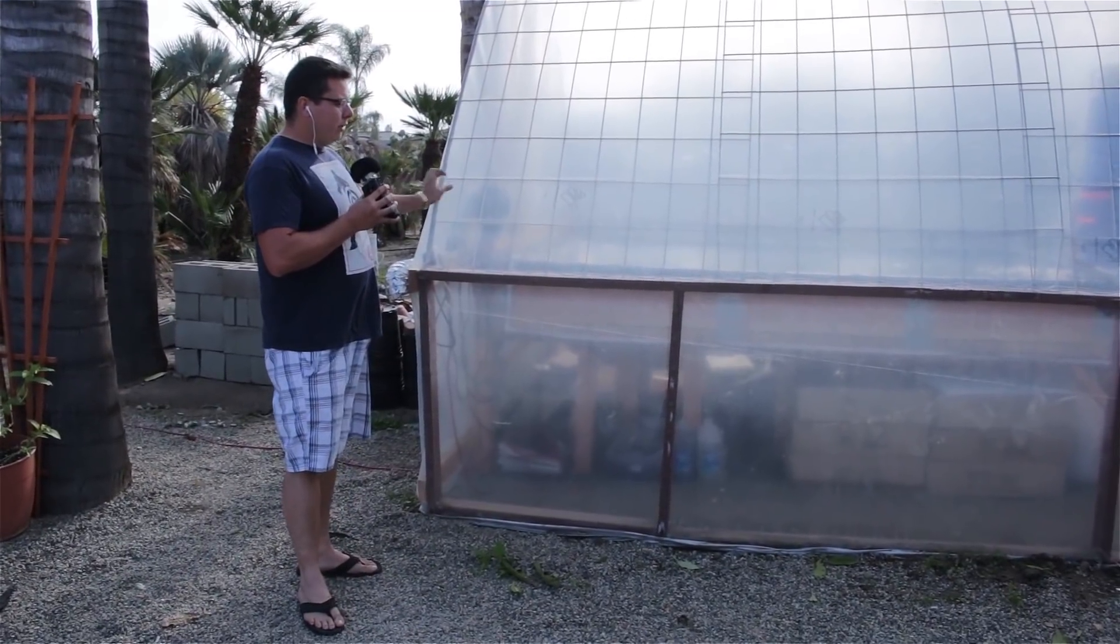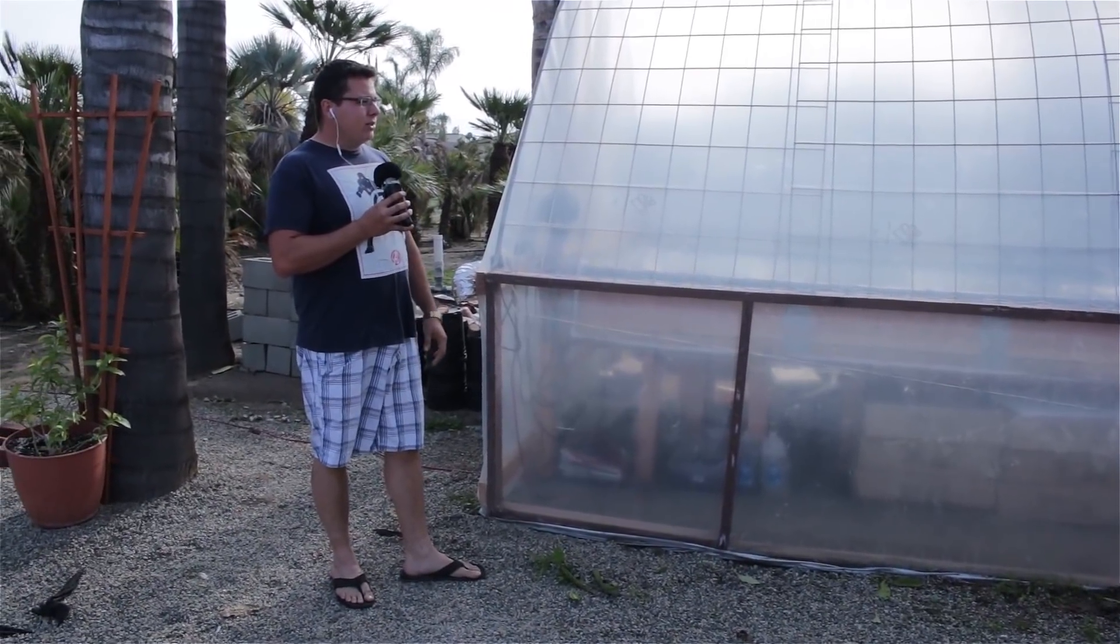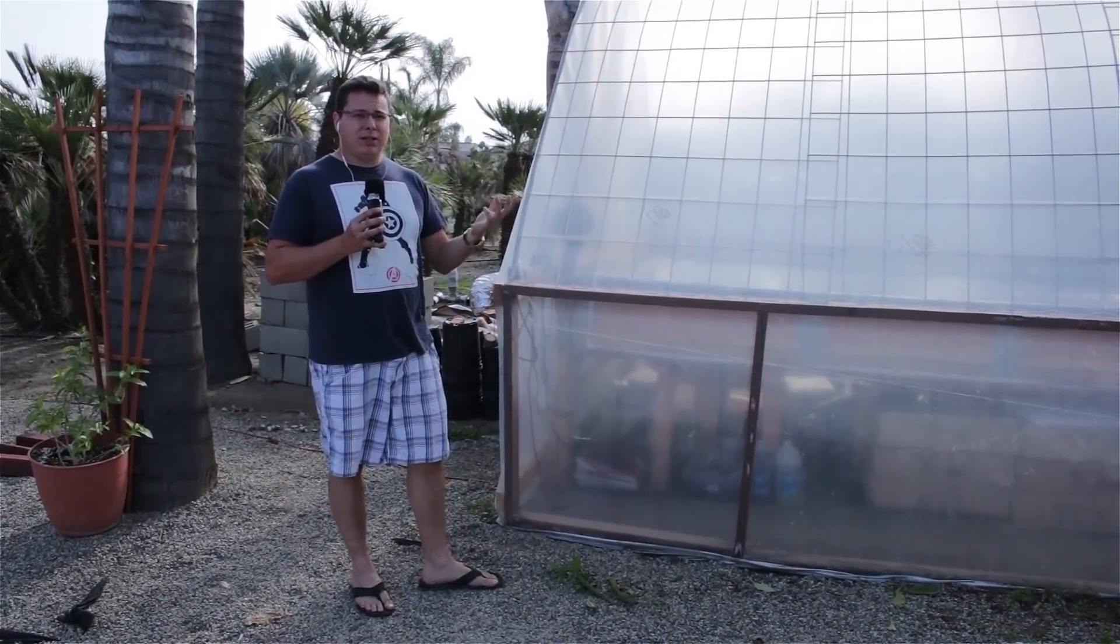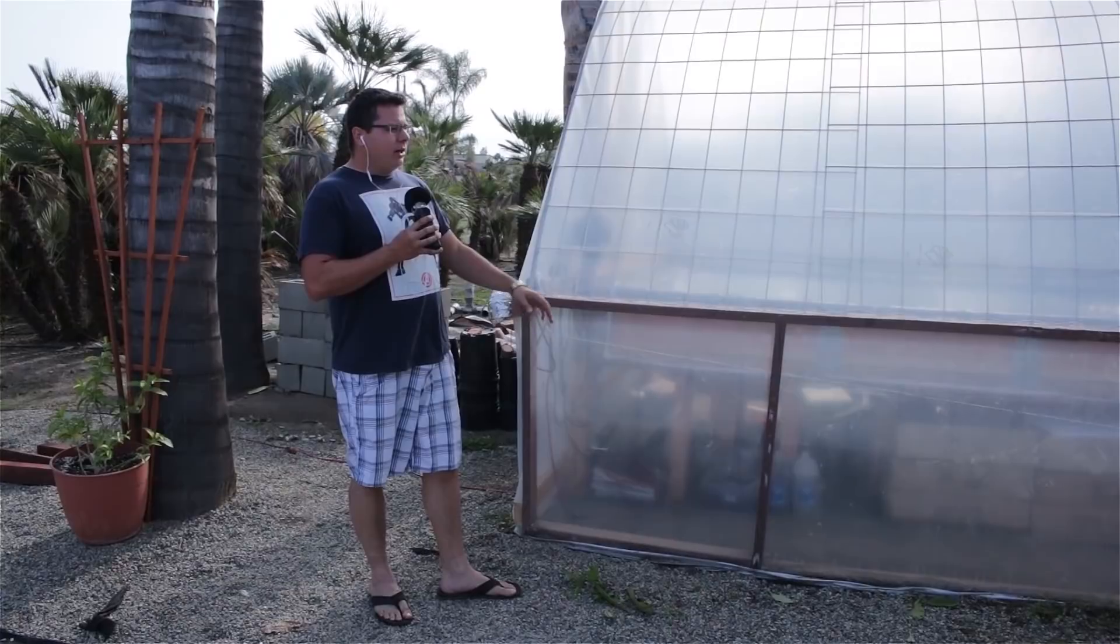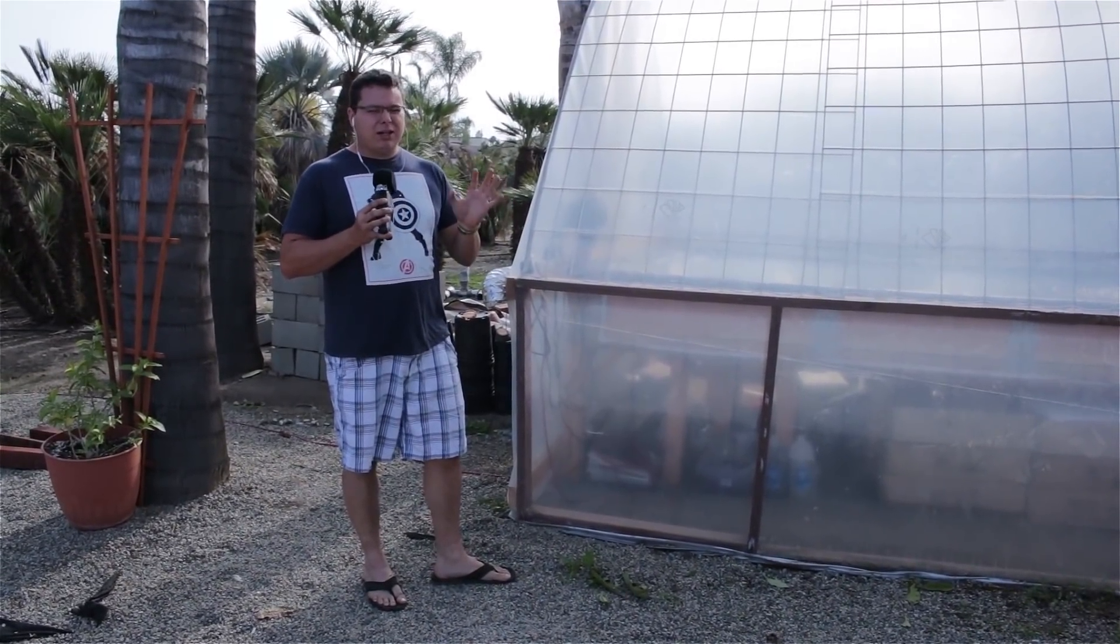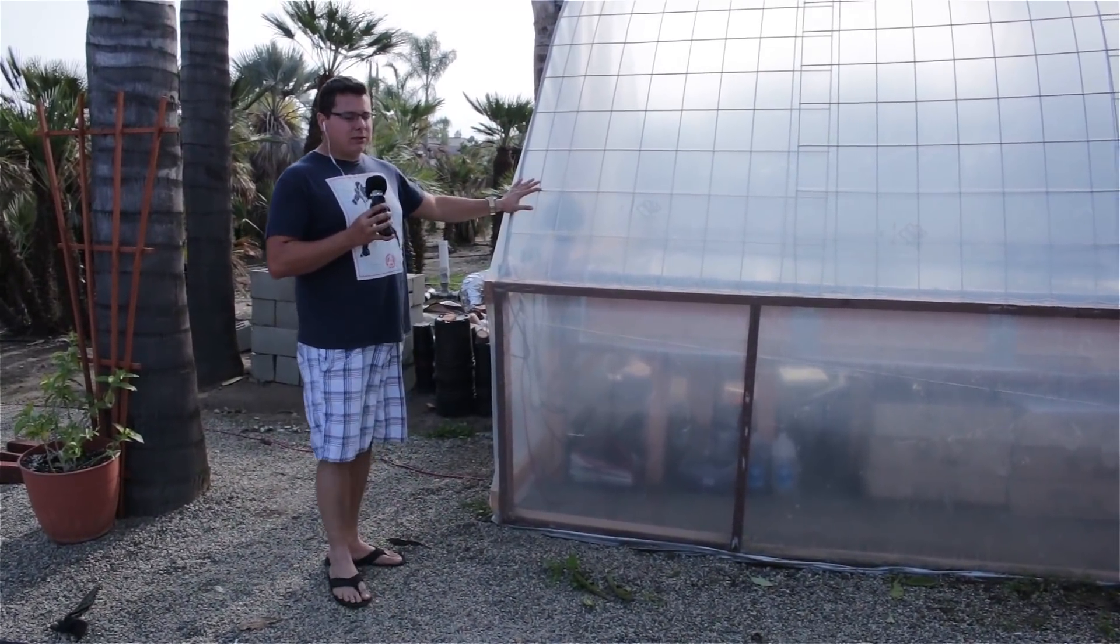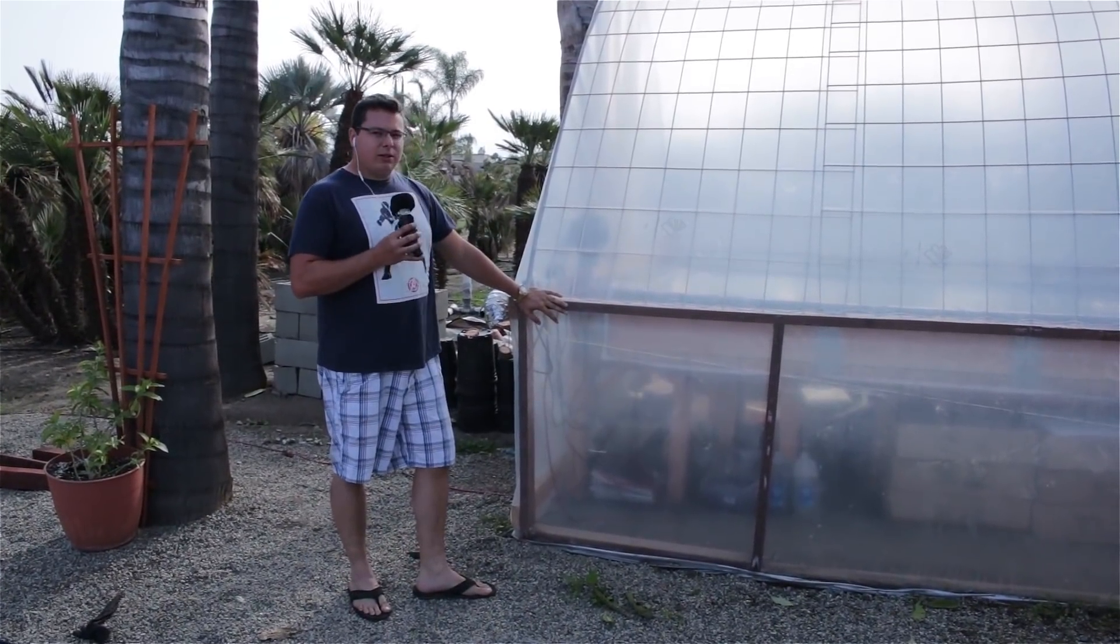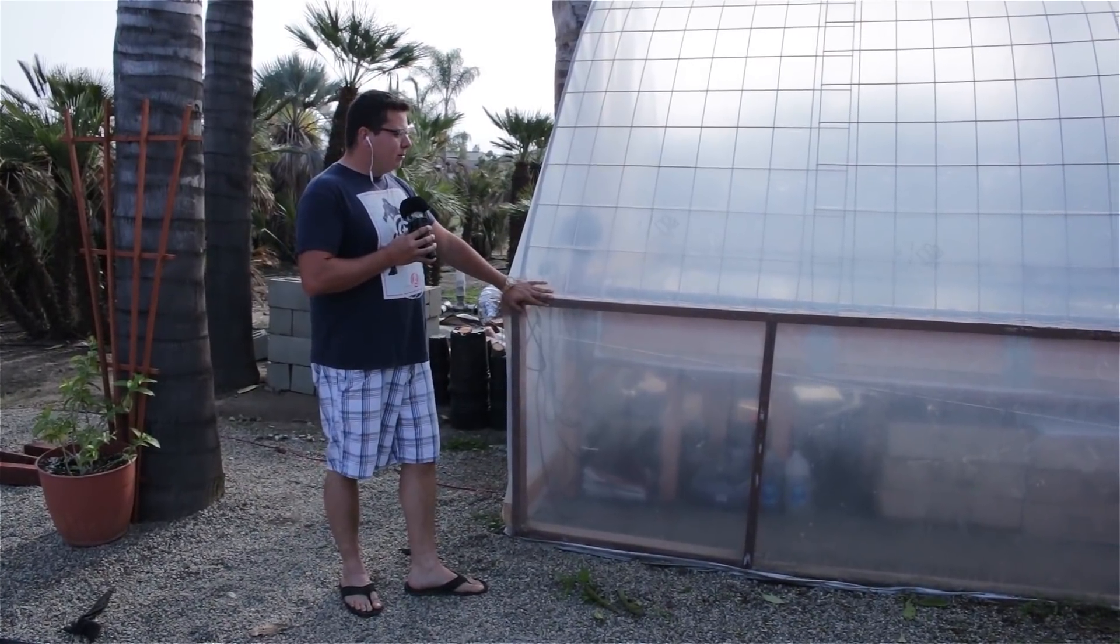And these cattle panels are really strong. We have them attached to the pressure treated wood with fence staples. They've withstood, I believe the winds last week when it was really windy, we had really bad winds actually. I believe they were upwards of 45, maybe 50 miles an hour, and the greenhouse withstood that. So it's incredibly strong, we did a great job building it. Of course, couldn't have done it without the help of my dad.